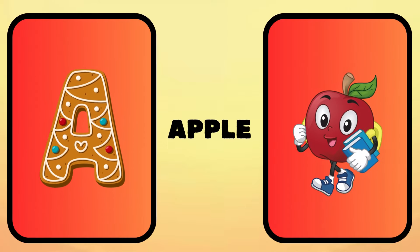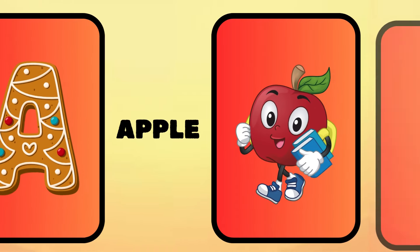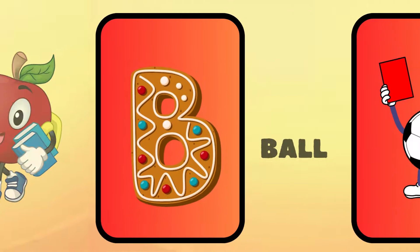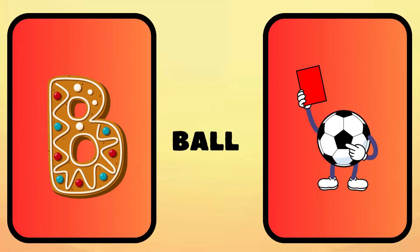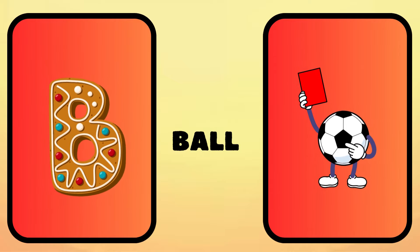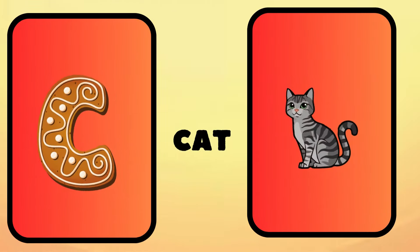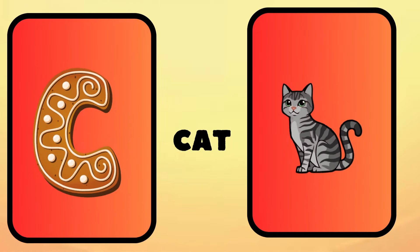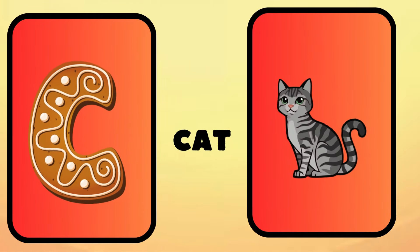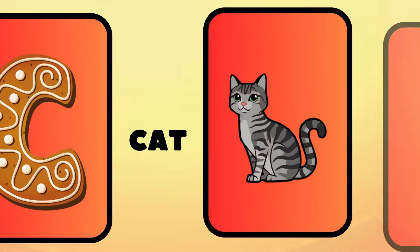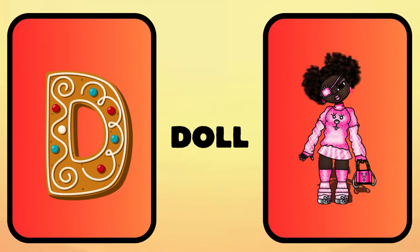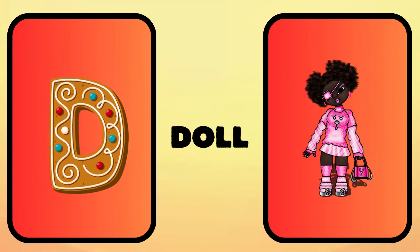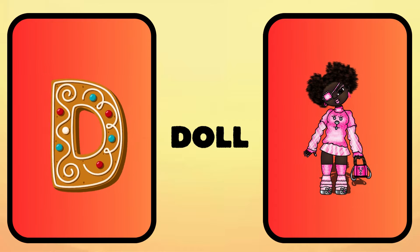A is for apple, a-a-apple. B is for ball, b-b-ball. C is for cat, c-c-cat. D is for doll, d-d-doll.